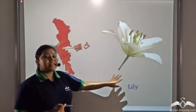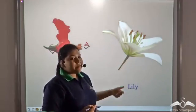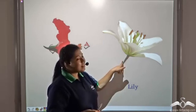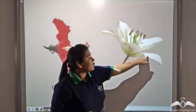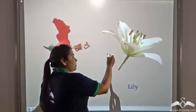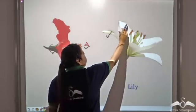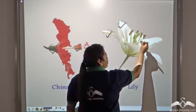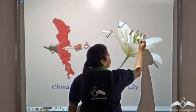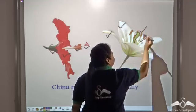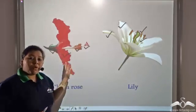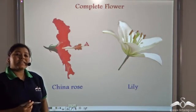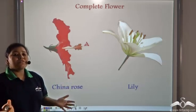Now let us see the lily. The sepals have taken a white colour and they seem just like the petals. Sepals are present, petals are present, the androsium is present, as well as the gynecium. So, both these flowers are complete flowers because they consist of all the four whorls.